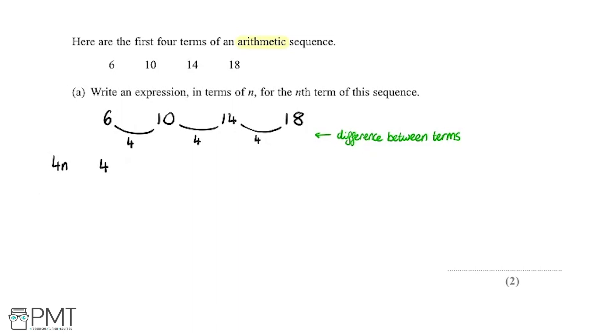Then the second term, we'll sub n equals 2, so that's 4 times 2, which is 8. Then 4 times 3 for the third term, which is 12, and then 4 times 4 for the fourth term, which is 16. So essentially, all we're writing out down here is the four times table.